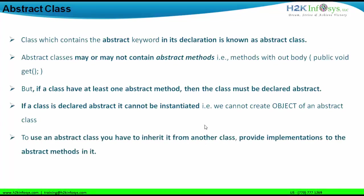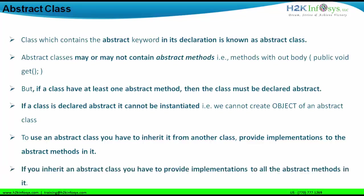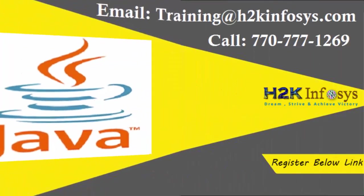How do you use an abstract class if you cannot create an object of it? You have to inherit it in a subclass. A subclass has to inherit the abstract class, and then the abstract class properties can be used. Also, if you inherit an abstract class, you have to provide implementation to all the abstract methods in it. If the abstract class has four abstract methods and a subclass inherits it, all four abstract methods will be overridden — meaning implemented — in the inheriting subclass.